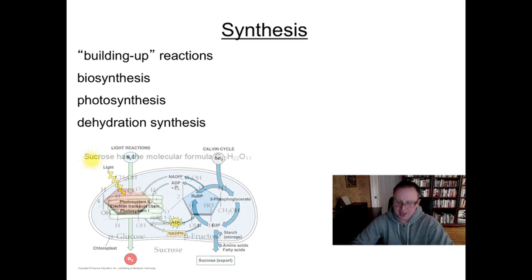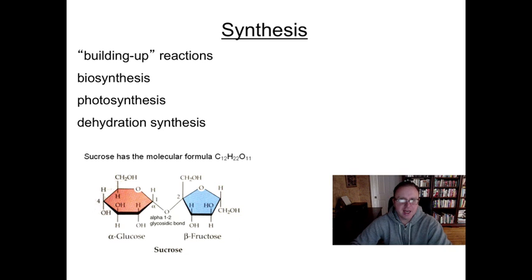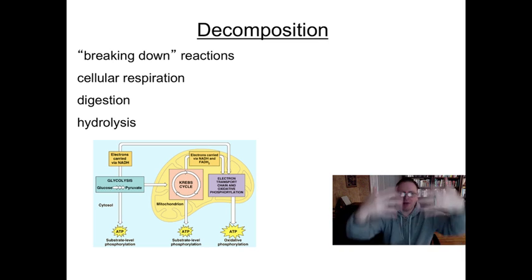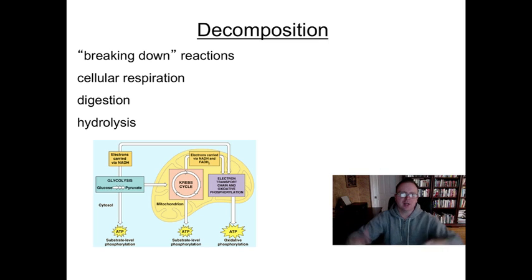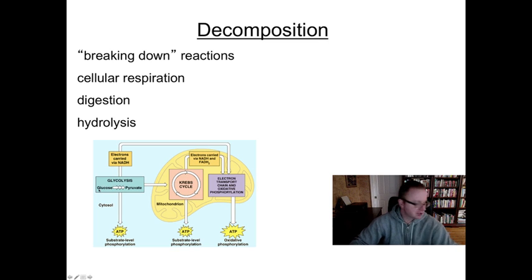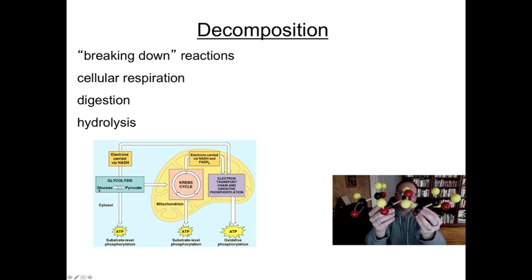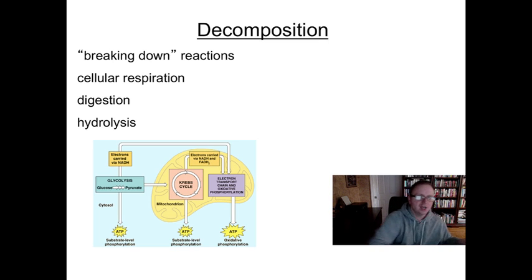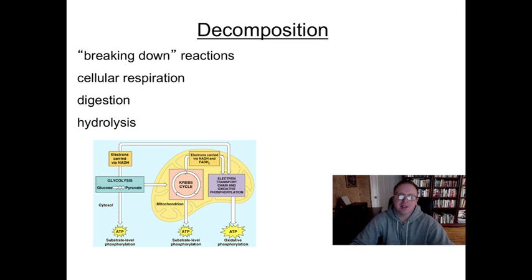We're going to move on to the next type of reaction, which is referred to as a decomposition reaction. Decomposition reactions are generally the kind of reactions where materials are broken down — we have a complex molecule and we're going to break it apart. A great example of this is cellular respiration, where we take our glucose molecule and run it through the mitochondria in a series of reactions that literally take the energy in the bonds out of this molecule. Digestion is another example of decomposition, where larger food molecules are broken down through chemical reactions occurring in the stomach or in the small intestine.